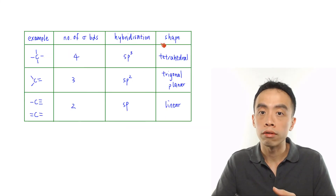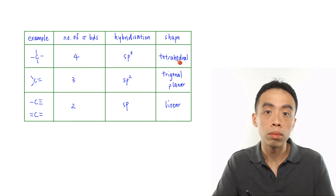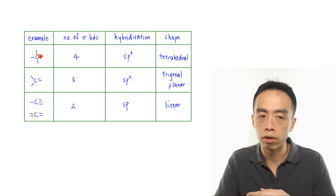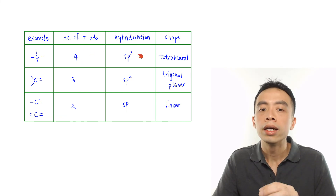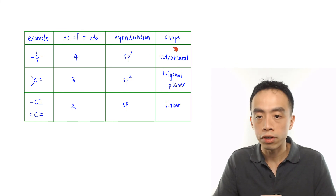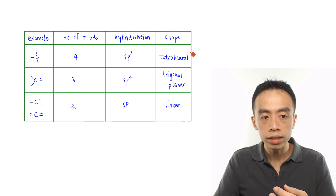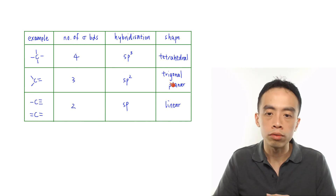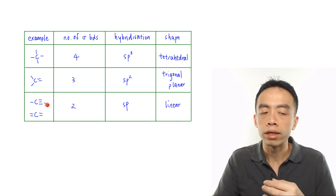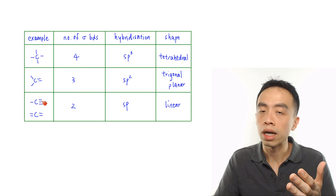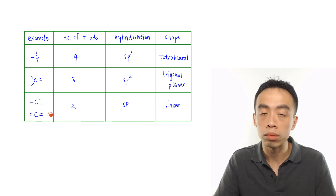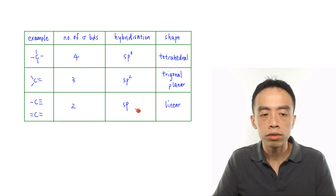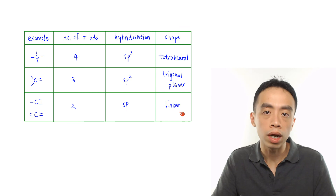In summary, for hybridization of carbon, we need to know: based on the number of sigma bonds carbon forms, what is the state of hybridization and the shape. If carbon forms four sigma bonds — as in CH4 — it is sp3 hybridized and the shape is tetrahedral. If it forms three sigma bonds — as in alkenes — it is sp2 hybridized and the shape is trigonal planar. If it forms two sigma bonds — as in alkynes, HCN, or carbon dioxide — it is sp hybridized and the shape is linear.